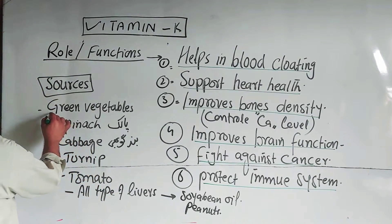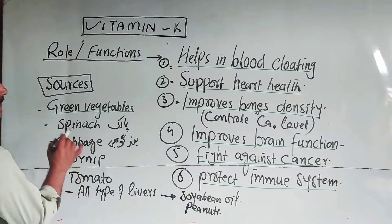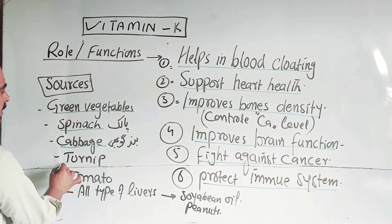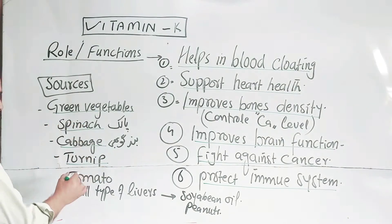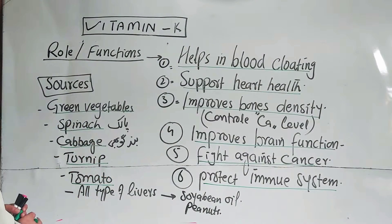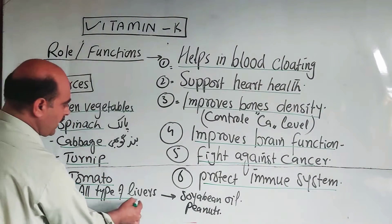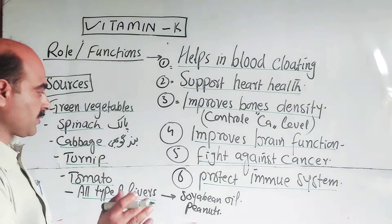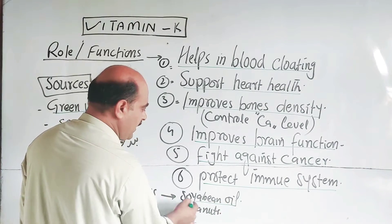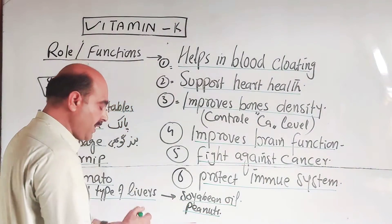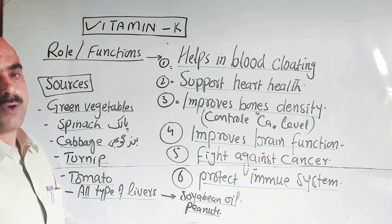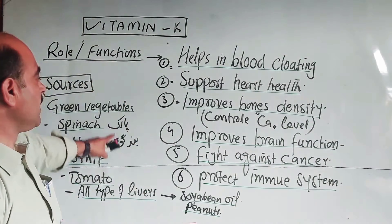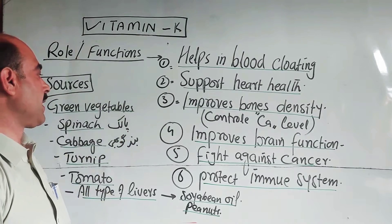To recap the sources: green vegetables, spinach, cabbage, bulgur, turnip, pepper, shaljum, tomato, all types of livers, soya bean oil, peanuts, and green peas. Also, dairy products such as milk are included. These are the major dietary sources of Vitamin K.